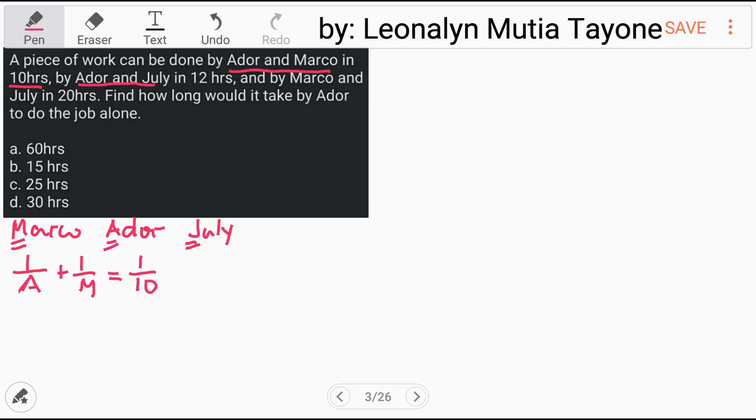Next, Adore and Julai. One job completed by Adore in A hours, plus one job completed by Julai—let J be the number of hours for Julai to finish alone. So, if they work together, one job will be completed in, from the given, 12 hours.